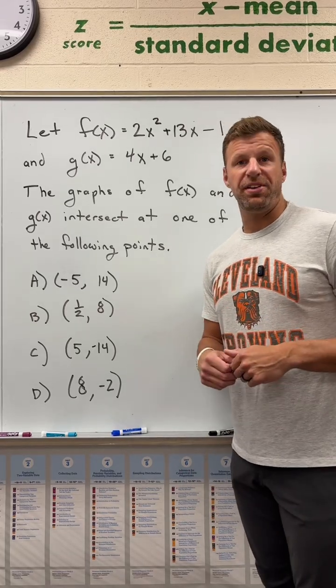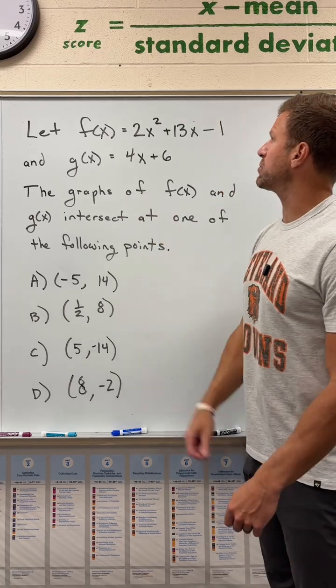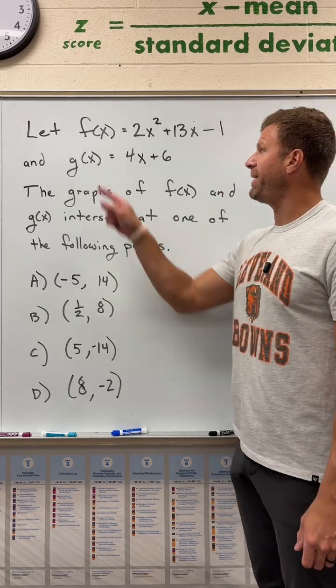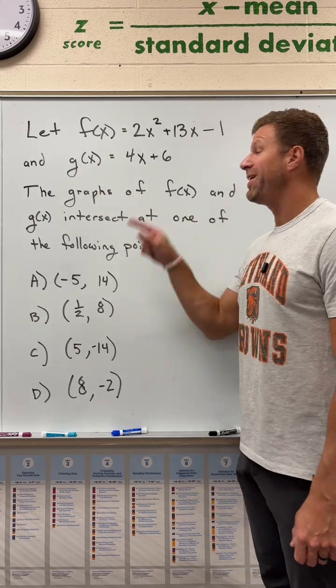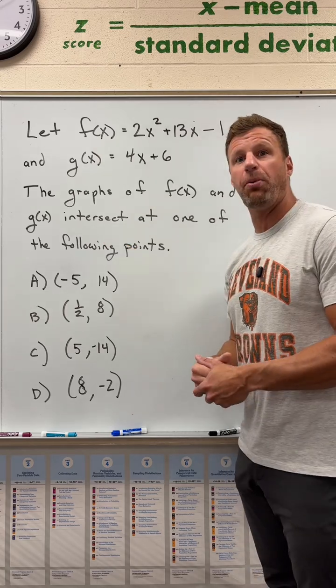Are you ready for the math section of the ACT? Try out this problem and see how ready you really are. Let f of x equal 2x squared plus 13x minus 1, and g of x equal 4x plus 6. The graphs of f of x and g of x intersect at which of the following points?